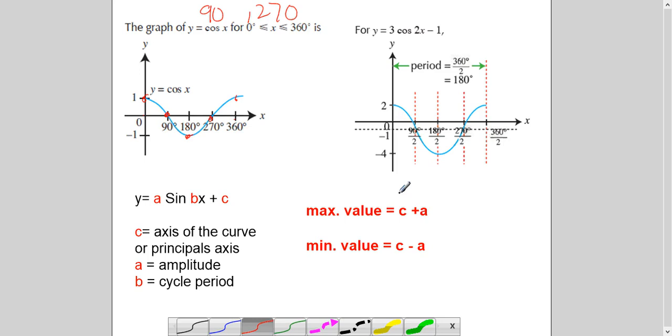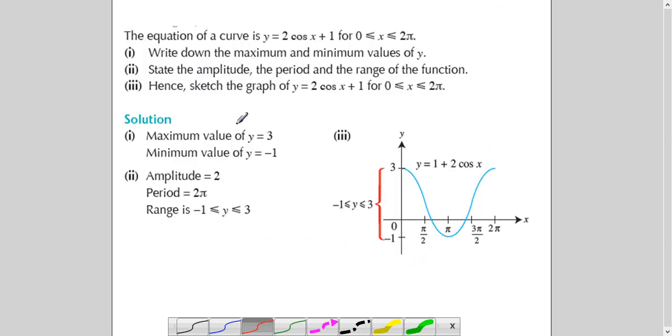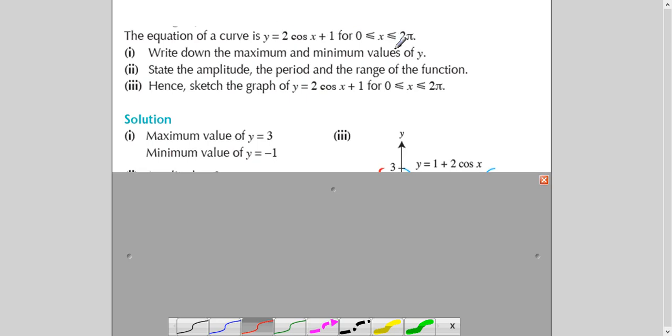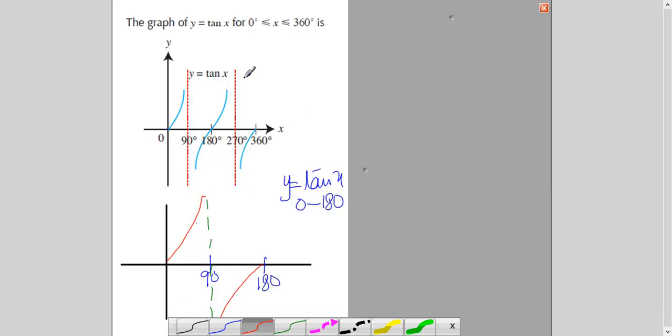So, I hope you understood sine and cosine. And, again, if it is in modulus, the part which is below the x-axis, you will reflect in the x-axis. Now, come to tan. This question also left. Sorry. I picked up this question also. So, cosine graph 2 cosine x plus 1 for 0 to 2 pi. I am leaving it for the time being. Because it is in radian. And, I have not explained radian here. So, just leave this curve. And, let's come to tan.